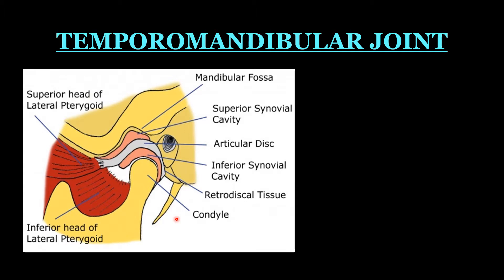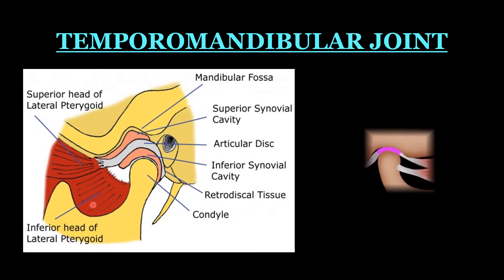The temporomandibular joint is made up of the condyle process, the squamous portion of the temporal bone, the fibrous interarticular disc, the ligaments, and the muscles. The articular disc divides the temporomandibular joint into two distinct cavities: the superior synovial cavity and the inferior synovial cavity. The articular disc is thinnest in the central zone, called the intermediate zone, while the anterior and posterior parts are the thickest. The posterior part is the retrodiscal part, and the superior and inferior heads of the lateral pterygoid muscles are attached to it.